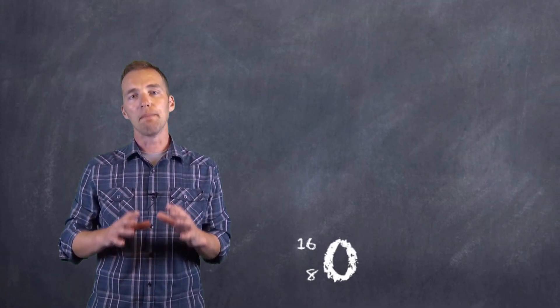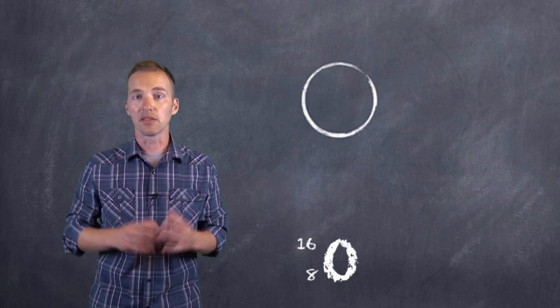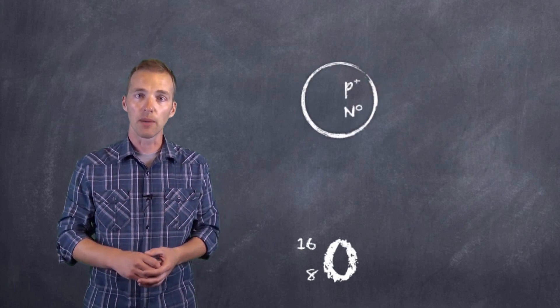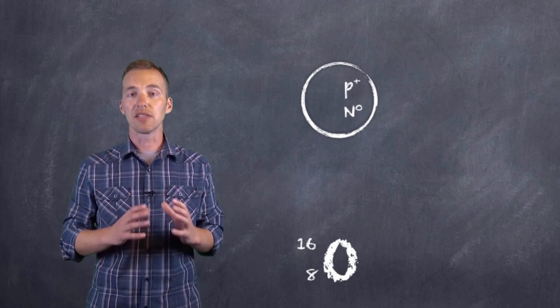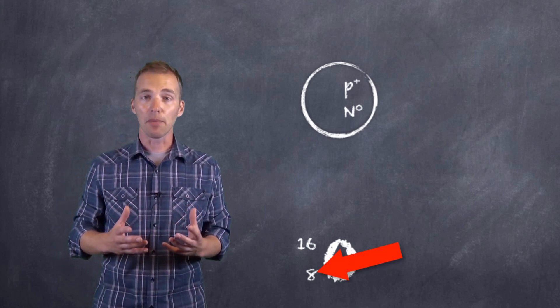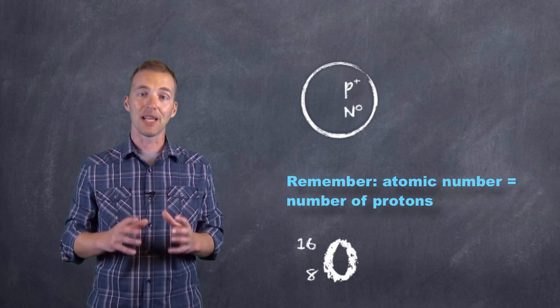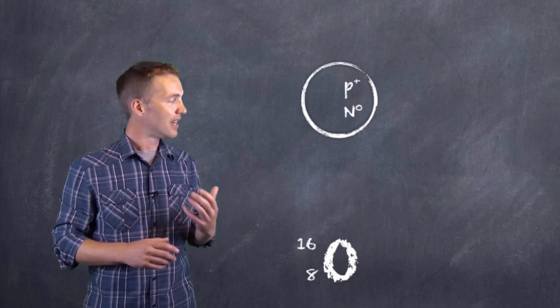Now the first step when drawing a Bohr-Rutherford diagram is to draw a circle representing the nucleus. And within the nucleus, we have to, of course, indicate the total number of protons and neutrons that exist within there. The easiest thing to start with is the atomic number, because the atomic number is just equal to the number of protons that we're going to place in the nucleus. In this case, it's going to be eight.